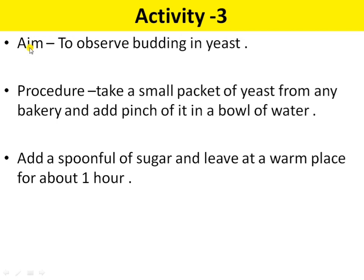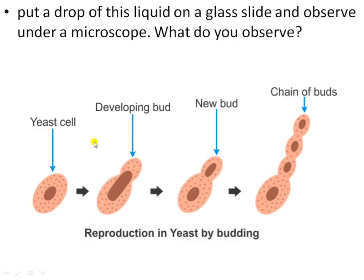Next is Activity 3rd. The aim of this activity is to observe budding in yeast. Take a small packet of yeast from any bakery and add a pinch of it in a bowl of water. Then add a spoonful of sugar and leave it at a warm place for about one hour. Now put a drop of this liquid on a glass slide and observe it under a microscope. You will be able to see a number of yeast cells with buds — that is budding.